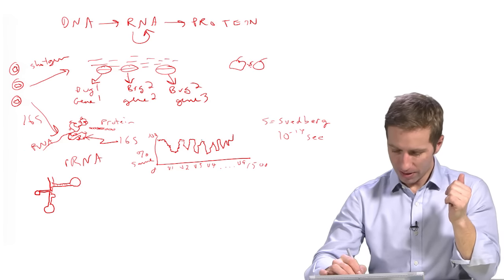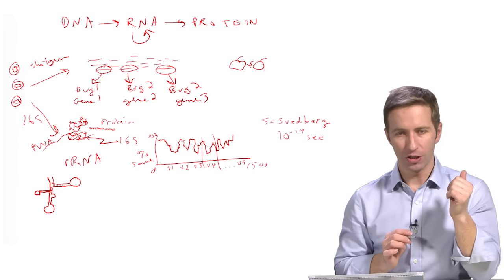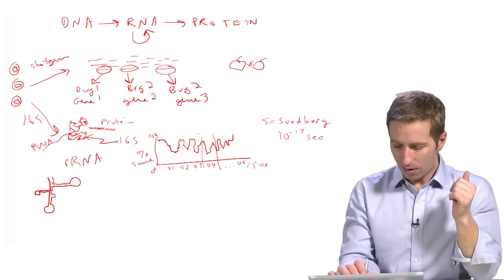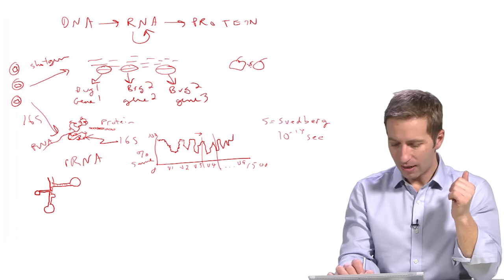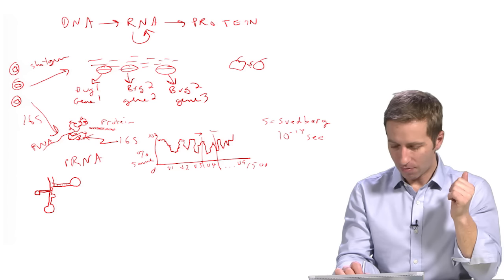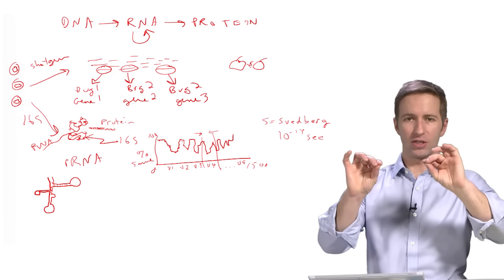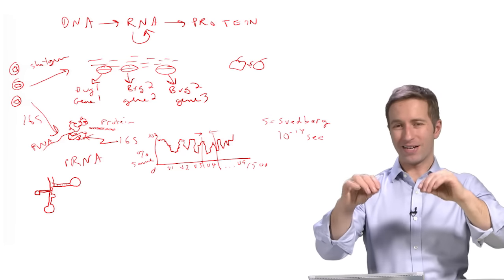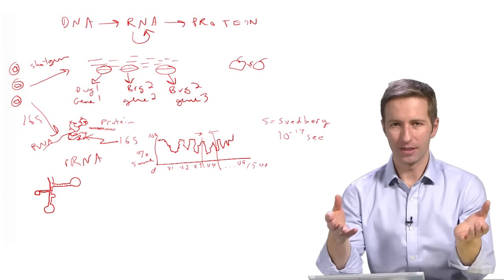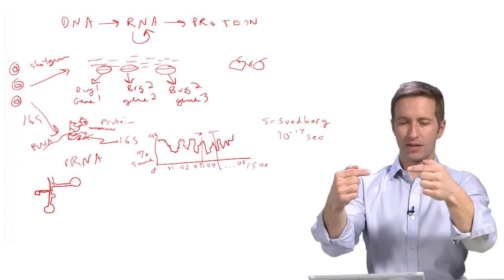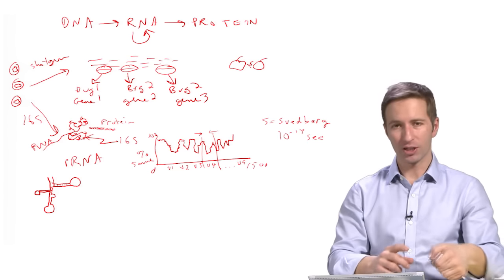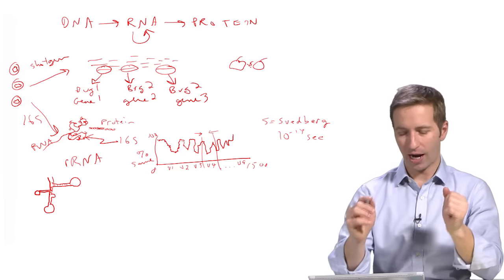So one of the most common segments that people sequence is right here in this variable 4 region. And that means that we need to find a little sequence of DNA that's going to match that conserved region, and another sequence that's going to match the conserved region on the other end. So that's the nice thing about having the two conserved regions there, is that because they're approximately the same across all bugs, you can design a DNA probe that's going to match up with most bugs, although it actually misses quite a few, and that's a very active area of research.